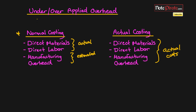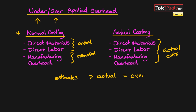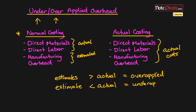Using normal costing means we're normally going to have an under or over applied amount, because estimates aren't perfect. For them to match actual costs you'd have to be really good or be able to read the future. If our manufacturing overhead estimates are greater than our actual incurred amounts, we have an over applied amount. If our budgeted overhead is less than our actual, we have an under applied amount.